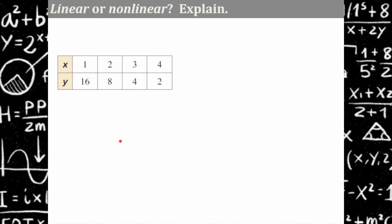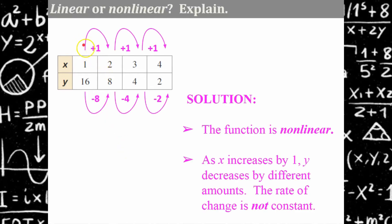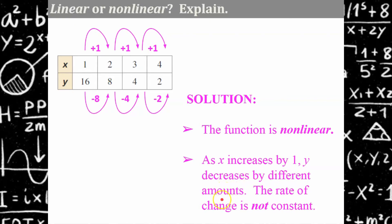Your turn — linear or non-linear? Pause and hit play when you're ready. Welcome back. We're going to identify the rate of change if there is one. X is increasing by 1, but y decreases by 8, then by 4, then by 2. These are different decrease rates, so this is non-linear. As x increases by 1, y decreases by different amounts — the rate of change is not constant.